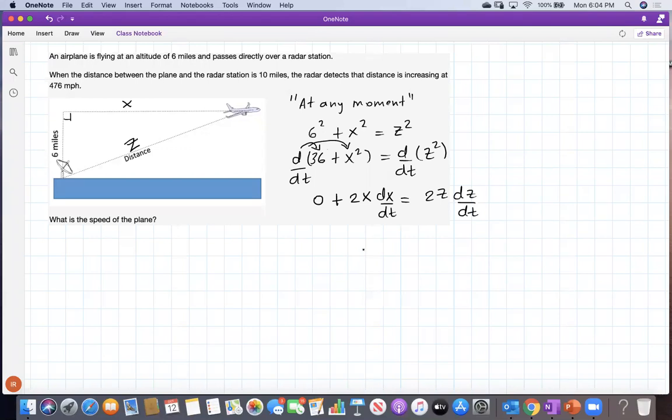Okay. So now it's time to replace the values that we have and figure out the values that we don't have, such as this rate of change, dx/dt, the speed of the plane. Do we have x? Well, we don't, so we're going to just leave some space for x. dx/dt is what we need to find.